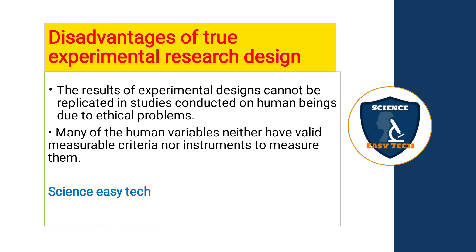Now, what are the disadvantages of true experimental research design? If we have some pros, we will definitely have some cons. The results of experimental designs cannot be replicated in studies conducted on human beings due to ethical problems. If you are going to do studies on human subjects repeatedly, you cannot repeat the same thing because of ethical principles such as beneficence, justice, maleficence, autonomy, and consent.